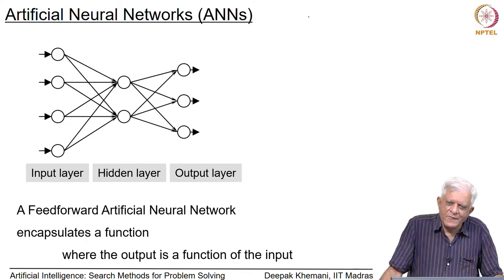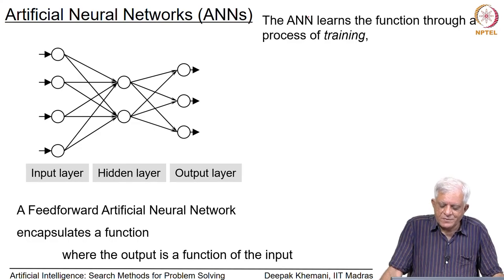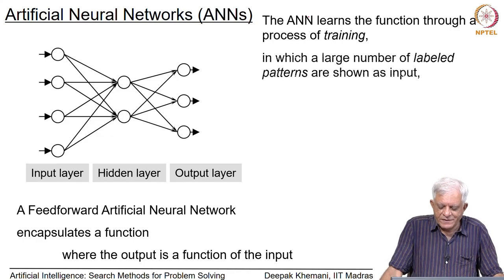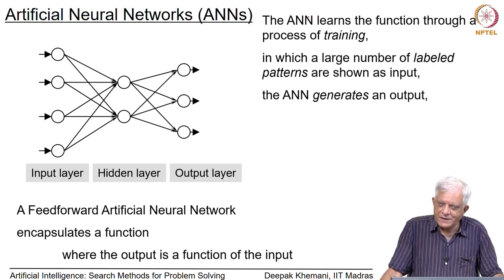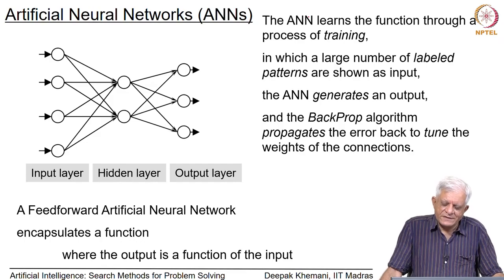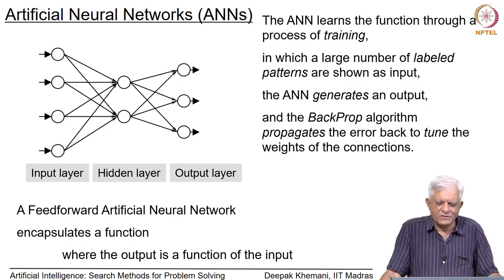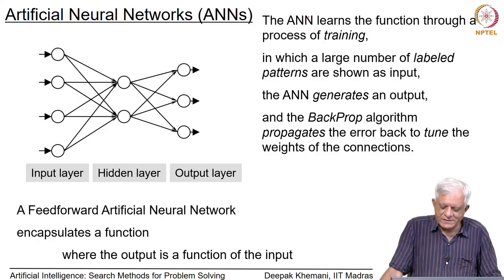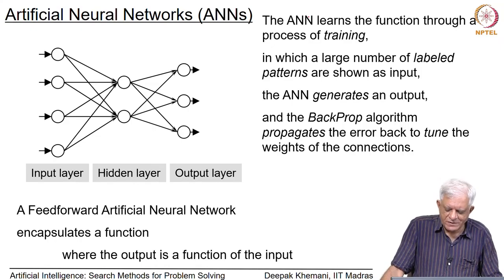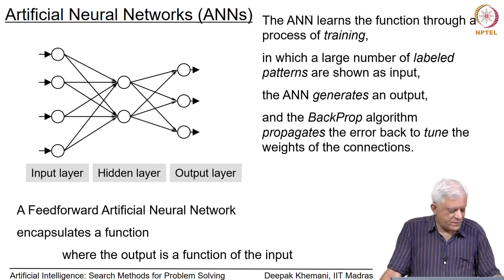How do neural networks learn to classify an image or learn a function? They do so through a process called training. The ANN learns a function through training in which a large number of labeled patterns are shown as input and the network generates output. If that output differs from the expected label, an algorithm called back propagation, devised around 1980, propagates the error back into the network to tune the weights of the connections.